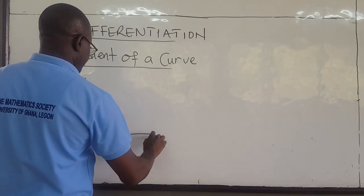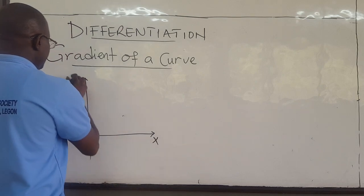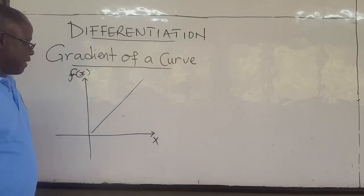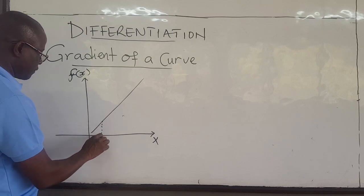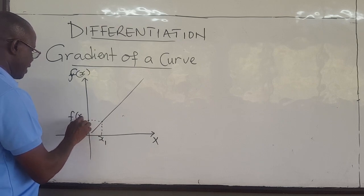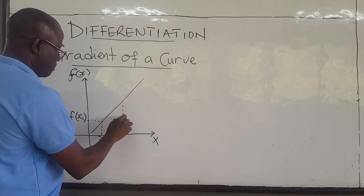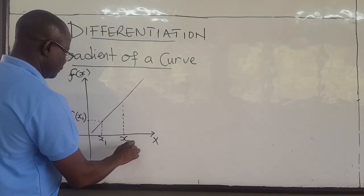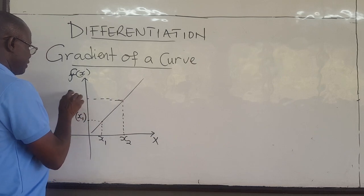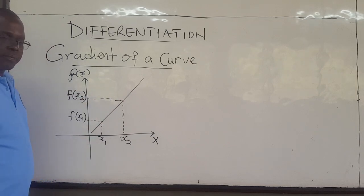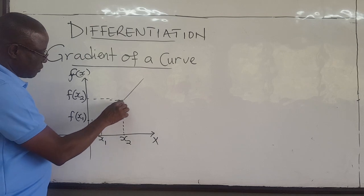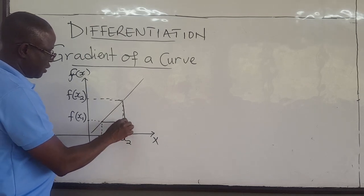If I have a line on the xy plane, let this be f of x, and this is a straight line. If I pick any point x1, then the corresponding value on the y axis is f(x1). I'll pick another point x2, then the value on the y axis is f(x2). The slope of this line — it doesn't matter where you pick these points — the slope is fixed.